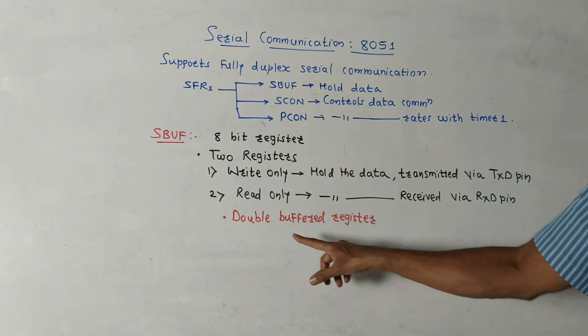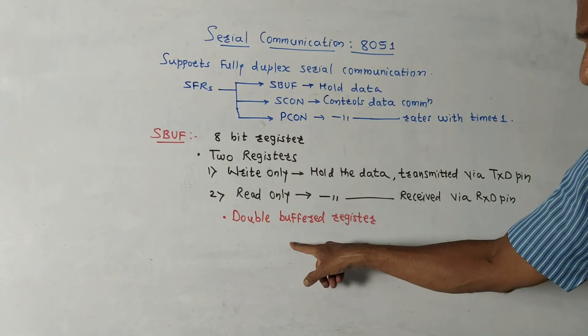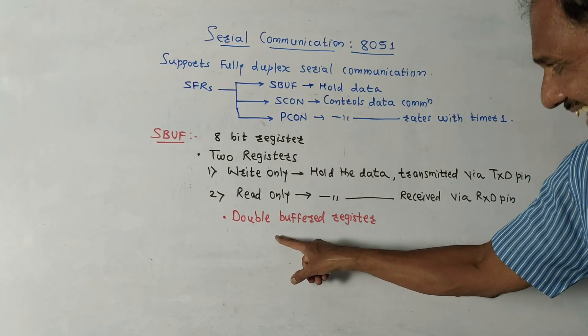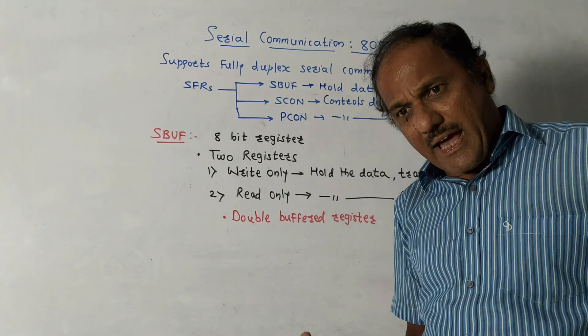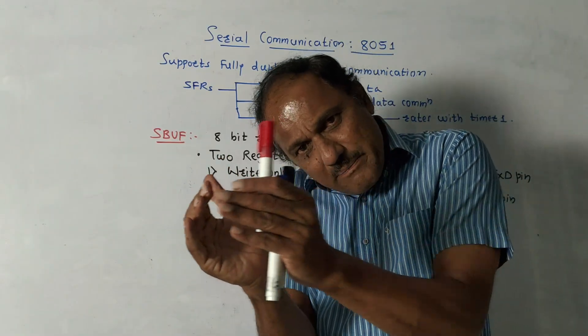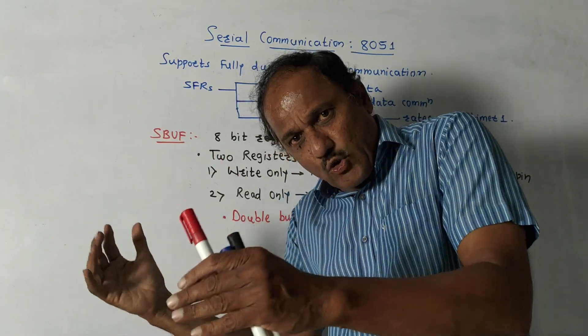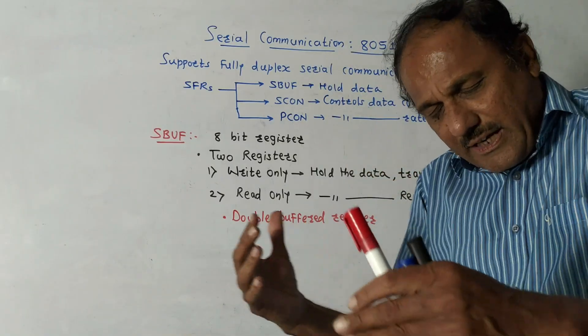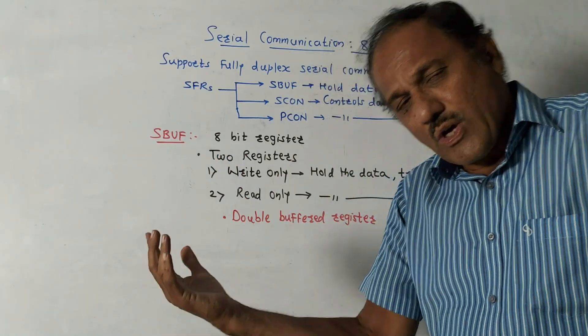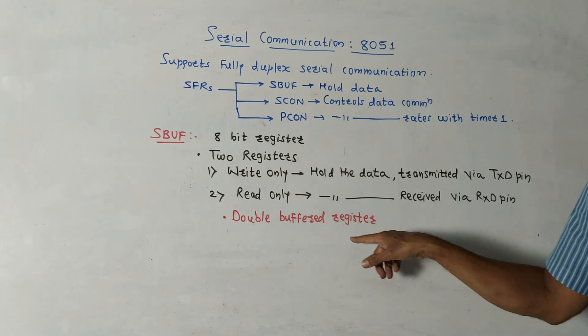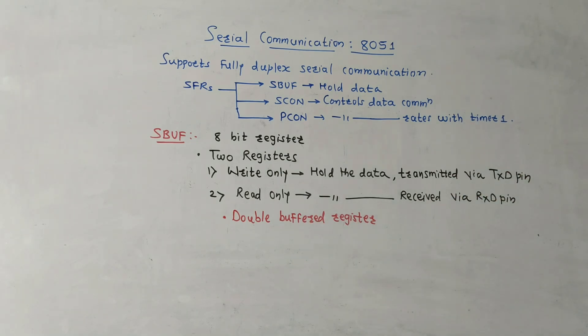Then one of the important points related to this serial buffer register is it has double buffered registers. This means if the previous data is in some intermediate register, it can accept or it can transmit as well as it can receive another data. That is the special function related to this serial buffer register.